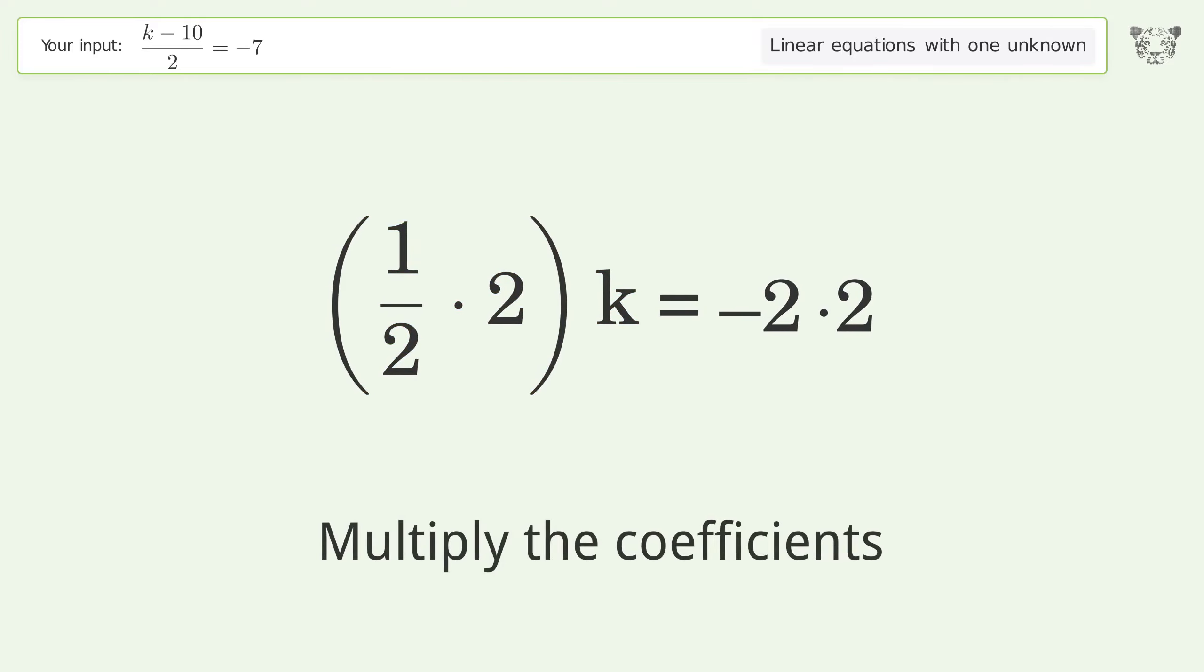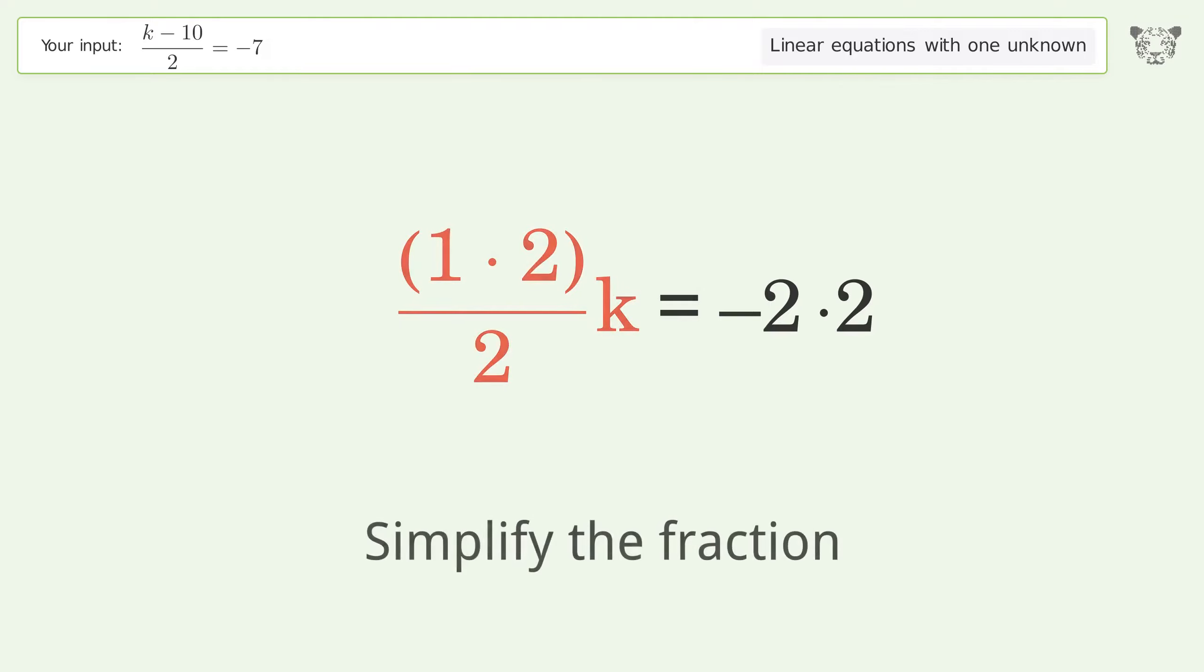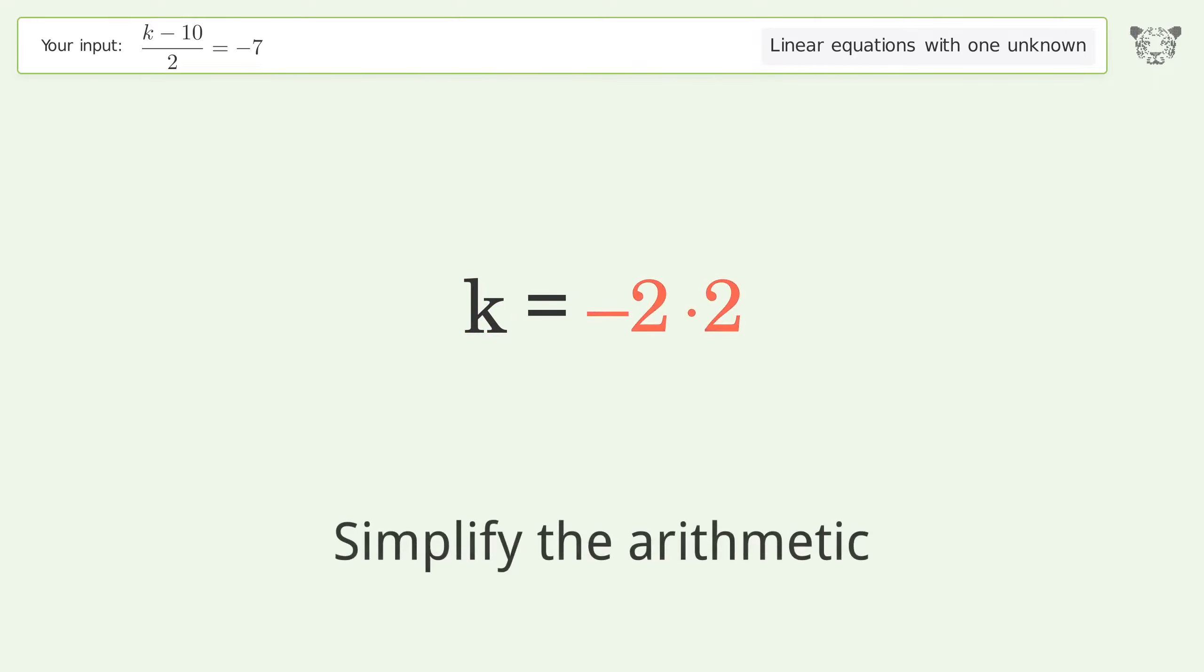Multiply the coefficients. Simplify the fraction. Simplify the arithmetic. And so the final result is k equals negative 4.